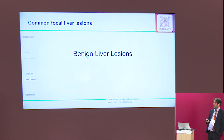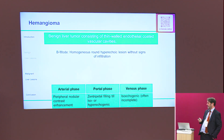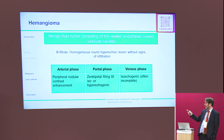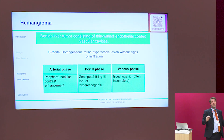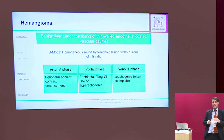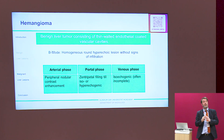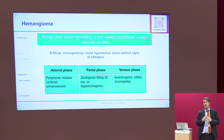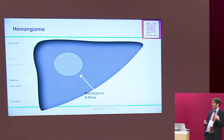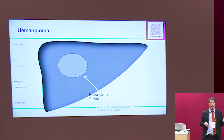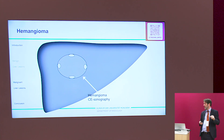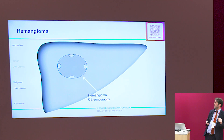Starting with benign liver lesions: hemangioma. In the arterial phase there is a perimodular enhancement — contrast arrives at the periphery and these nodules grow larger. In the portal venous and late phase, under optimal scanning, the lesion completely fills with contrast. Sometimes hemangiomas have thrombotic changes inside and are not completely filled, but they still show perimodular enhancement. We see the typical hemangioma behavior in grayscale, then start with contrast and watch the nodules grow until the lesion is completely filled.